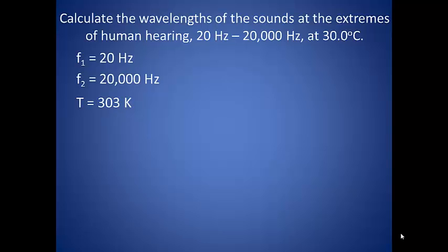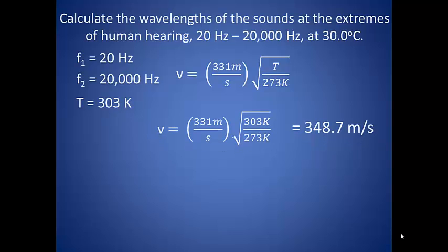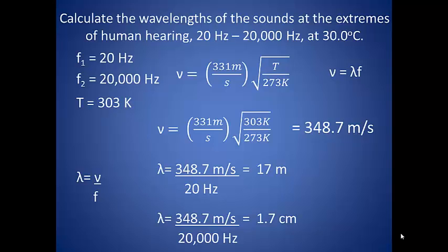Calculate the wavelengths of the sounds at the extremes of human hearing: 20 hertz and 20,000 hertz at 30 degrees Celsius. First we need to convert the speed of sound to the temperature at which we are operating. We are looking at a ratio, so we do need to convert our temperature into Kelvin. At 30 degrees Celsius, the speed of sound is 348.7 meters per second. Now that we know the velocity of the wave, we can use the frequency to determine the wavelength. For a sound wave with a frequency of 20 hertz, the wavelength turns out to be 17 meters. For a sound wave with a frequency of 20,000 hertz, the wavelength turns out to be 1.7 centimeters.